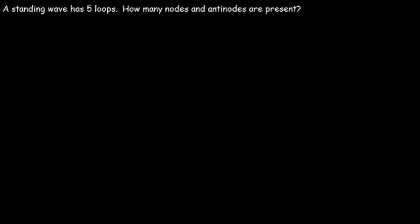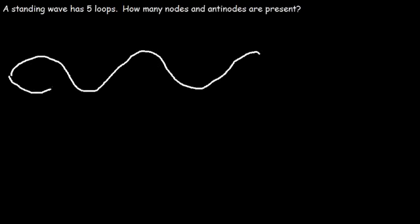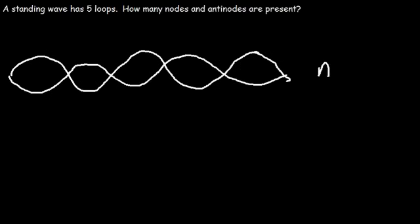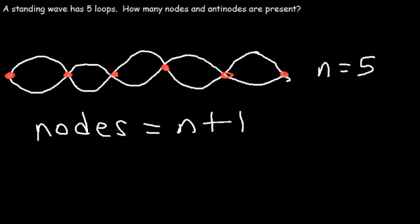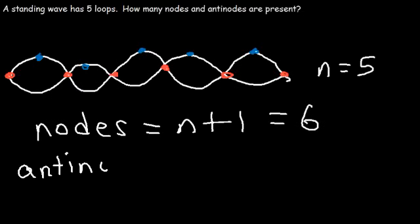Here's the first question: a standing wave has five loops. How many nodes and antinodes are present? Let's begin by drawing a picture with five loops, so n is equal to 5. Counting the nodes: one, two, three, four, five, six. The number of nodes is always equal to n plus 1, so in this case it's 6. Now the antinodes: one, two, three, four, five — there are five antinodes. The number of antinodes is always equal to the n value.